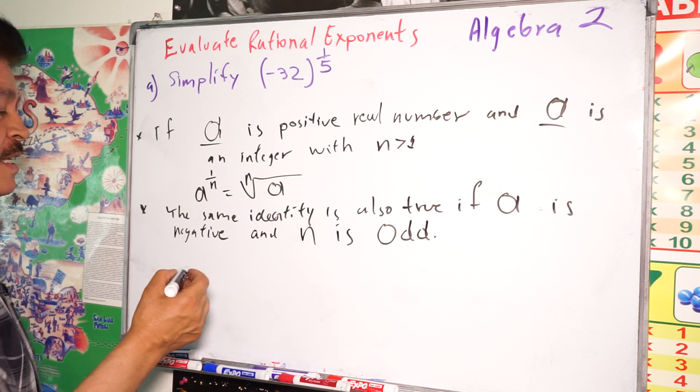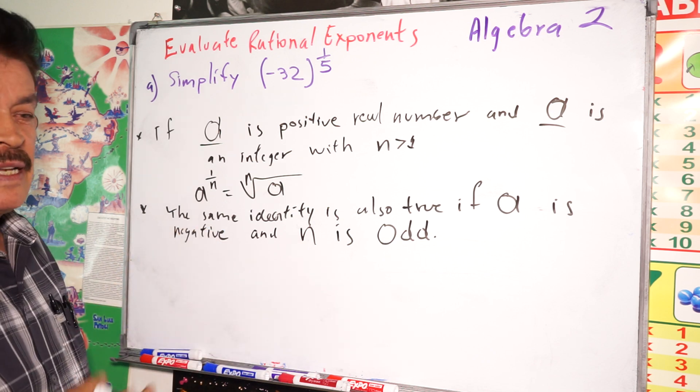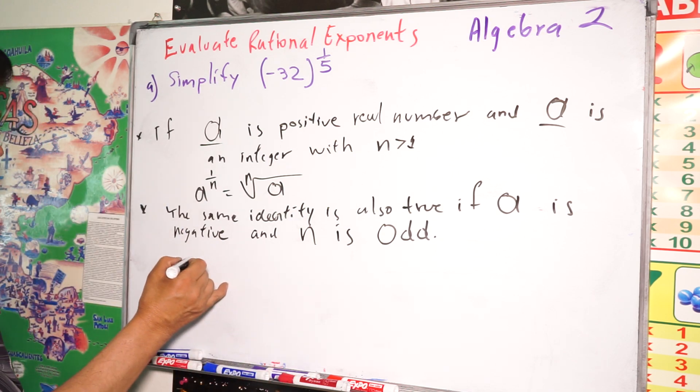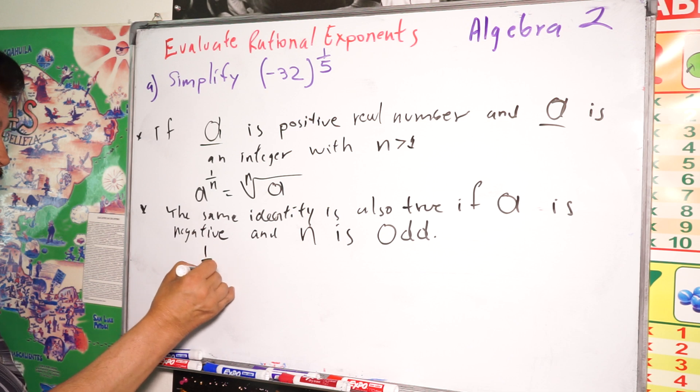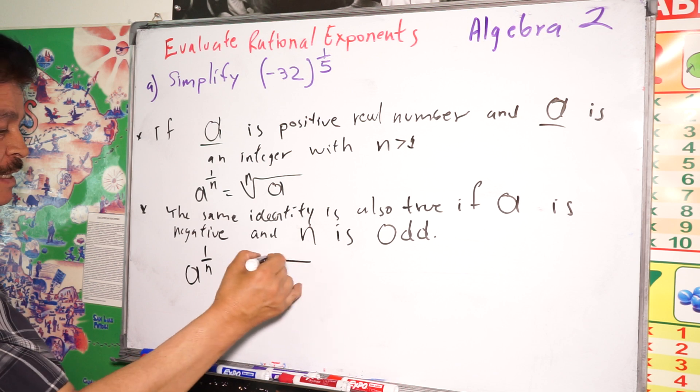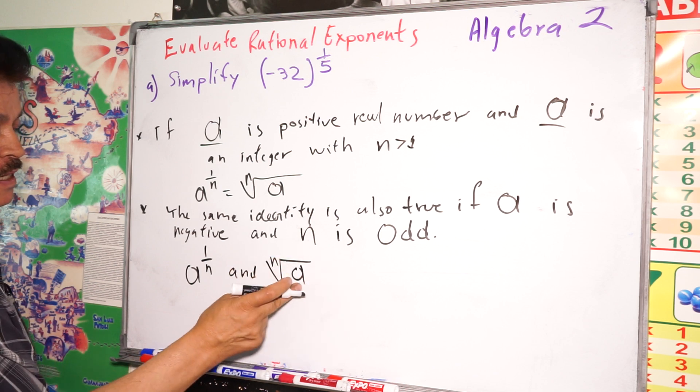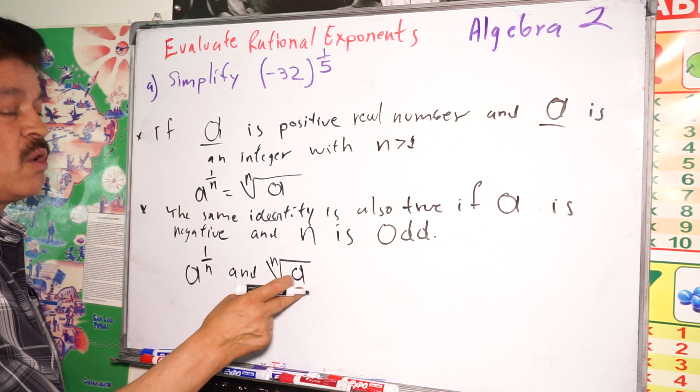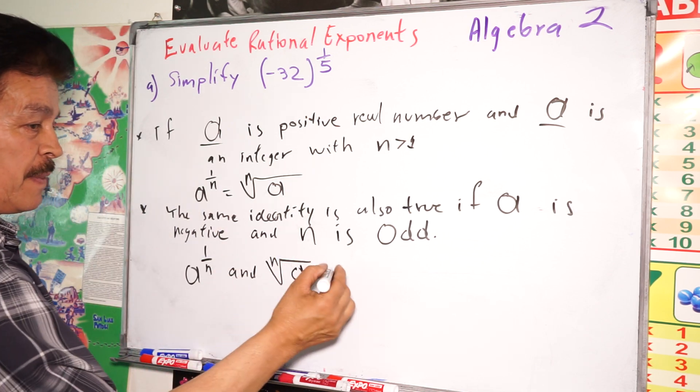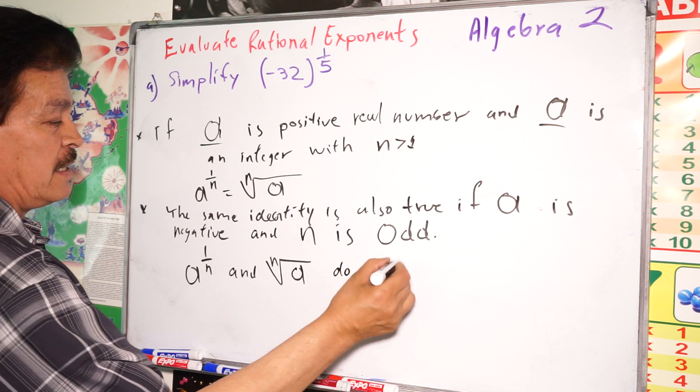However, if a is negative and n is even, then a^(1/n) and the nth root of a do not exist.